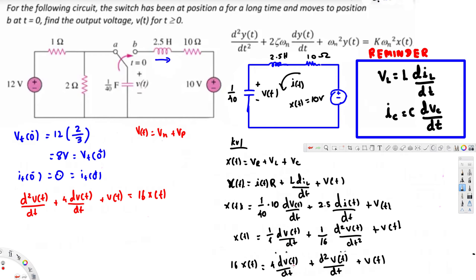Since this is a non-homogeneous second order differential equation, the solution is V(t) equals the homogeneous solution plus the particular solution. To find the particular solution, we treat V(t) as a constant, so all derivative terms go to zero and we are left with 16·V(t) = 16·X(t), therefore V(t) = X(t). Since X(t) equals 10 volts, the particular solution is 10.